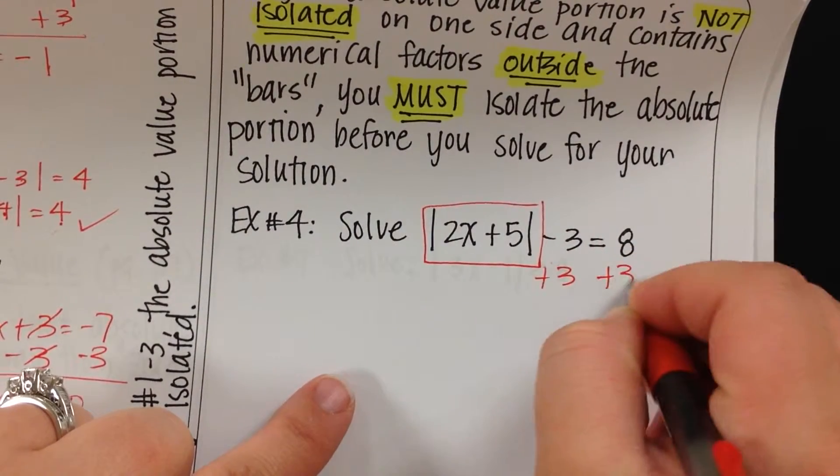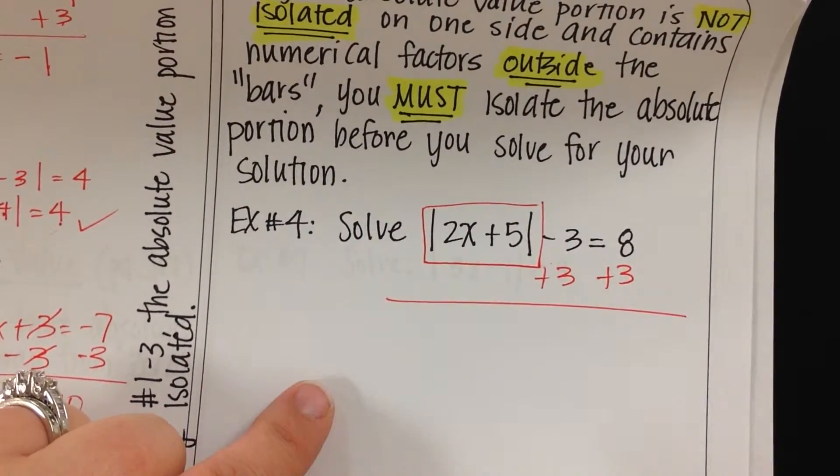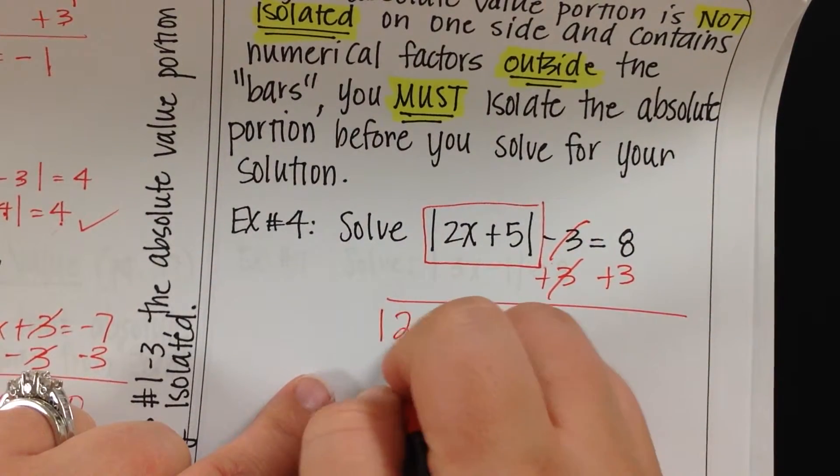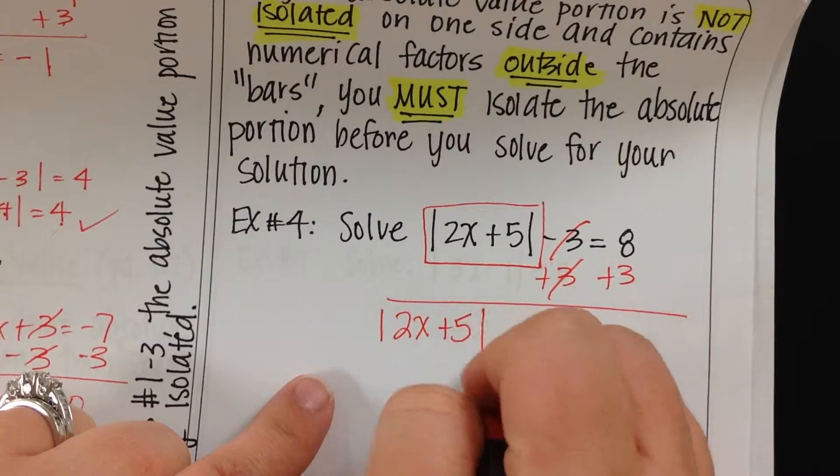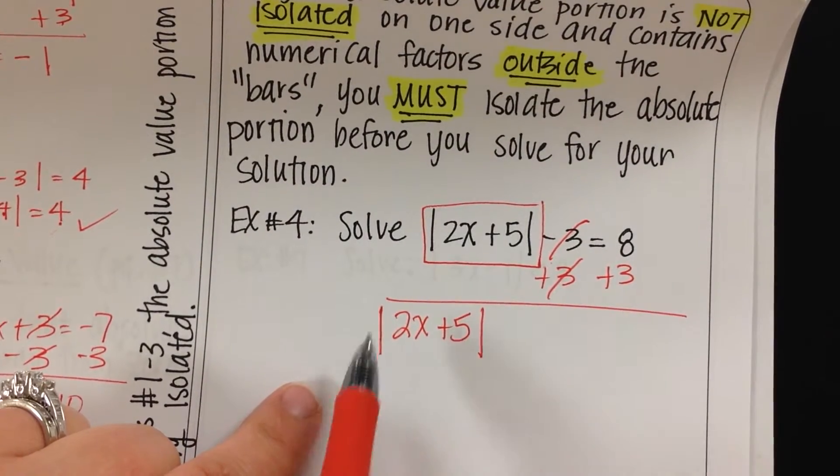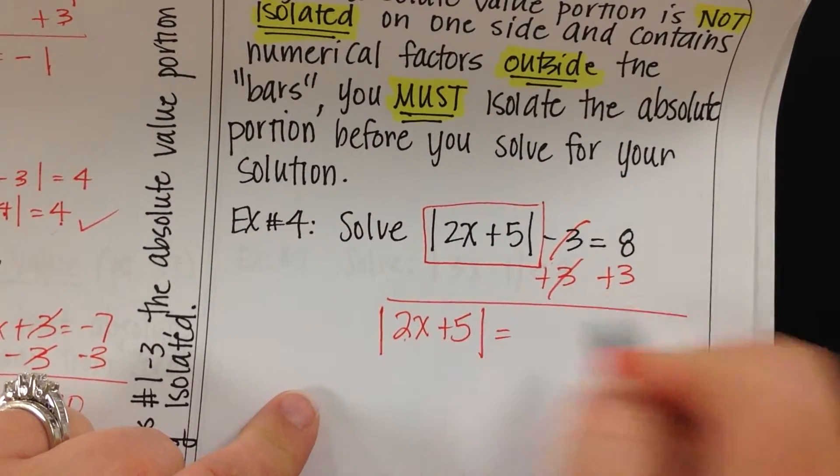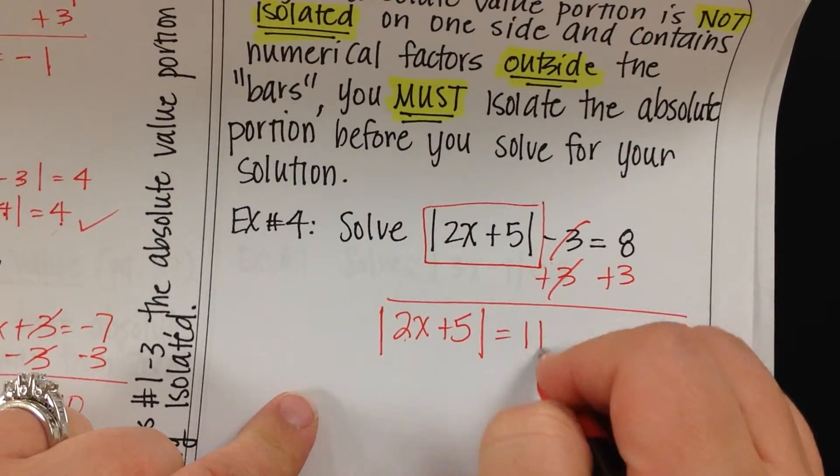You're not changing any kind of equation process of moving your variables left and right. I'm going to rewrite this as 2x plus 5 and it's still in the absolute value bars. That's one of the mistakes students make, they drop the bars too soon. This is equal to 8 plus 3 is 11.